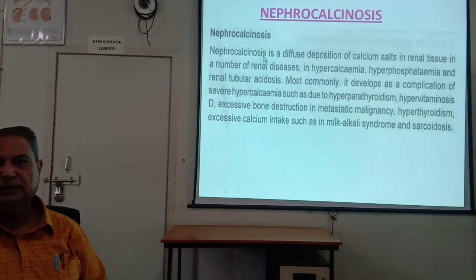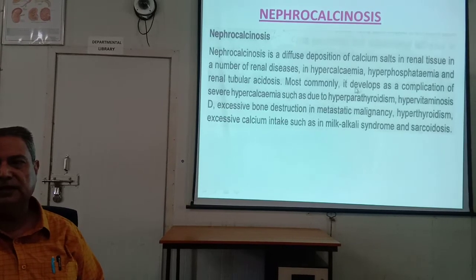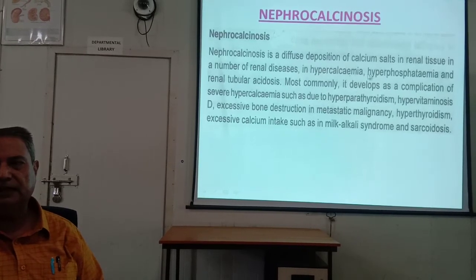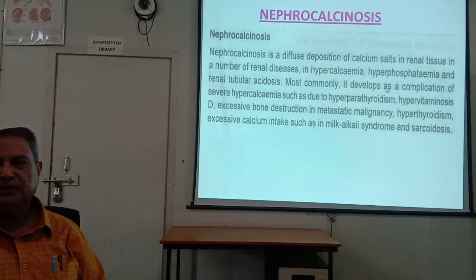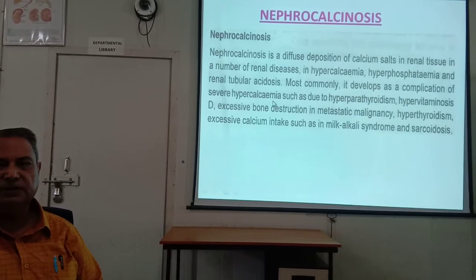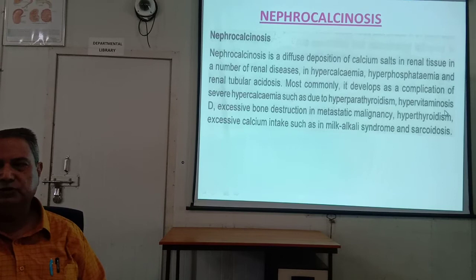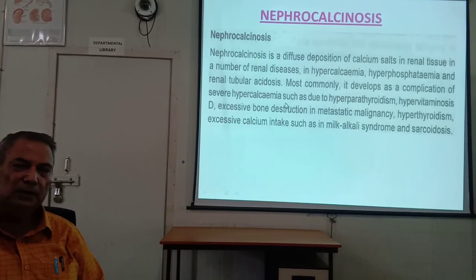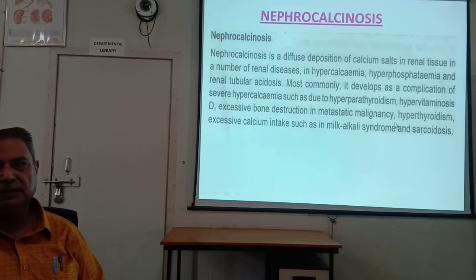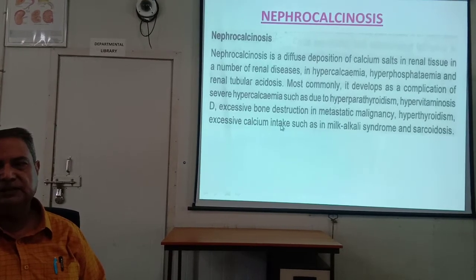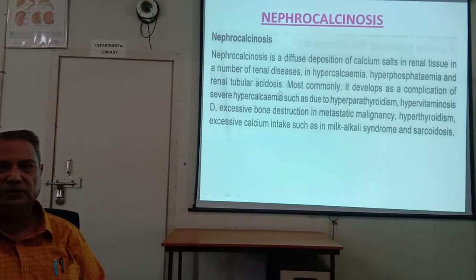Nephrocalcinosis is diffuse deposition of calcium salts in the renal tissue, occurring in hypercalcemia, hyperphosphatemia, and acute tubular acidosis. It most commonly develops as a complication of hypercalcemia due to hyperparathyroidism, hypervitaminosis D, excess bone destruction in metastatic malignancy, hyperthyroidism, excessive calcium intake (milk-alkali syndrome), and sarcoidosis.